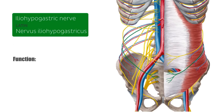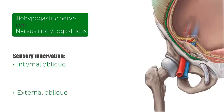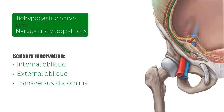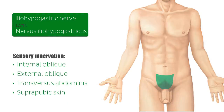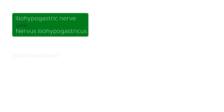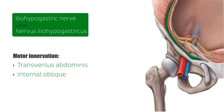The iliohypogastric nerve provides both sensory and motor innervation. Sensory nerve fibers supply the internal oblique muscle, the external oblique muscle, and the transversus abdominis muscle, along with the suprapubic skin and the posterolateral gluteal skin. Motor nerve fibers supply the transversus abdominis muscle and the internal oblique muscle, as well as the tendon formed from their common aponeurosis, the conjoint tendon.